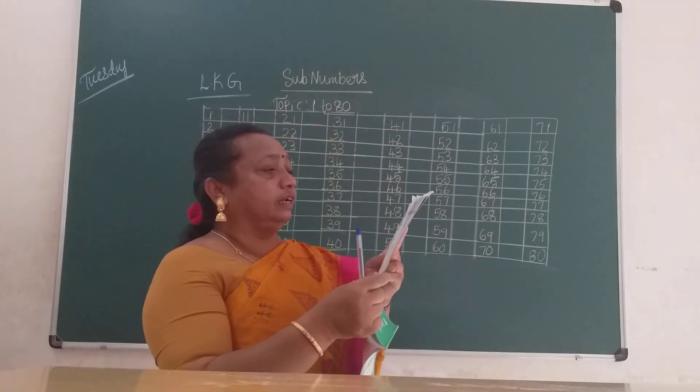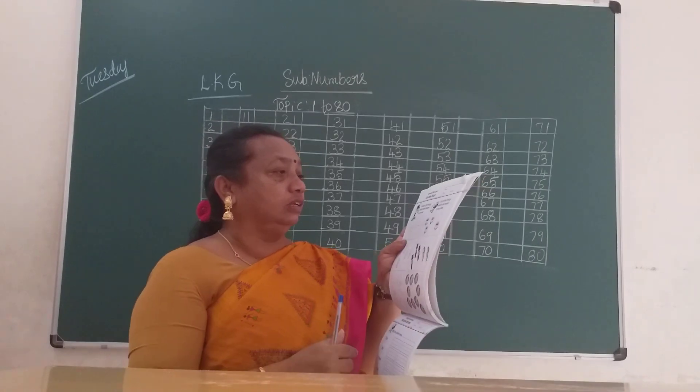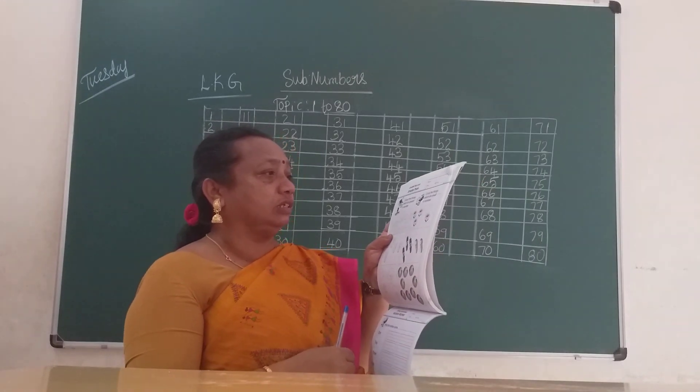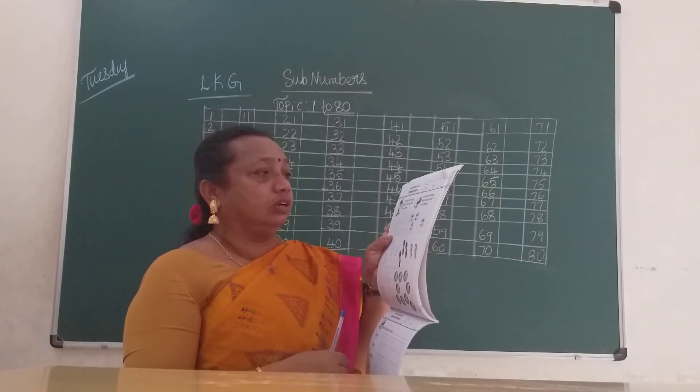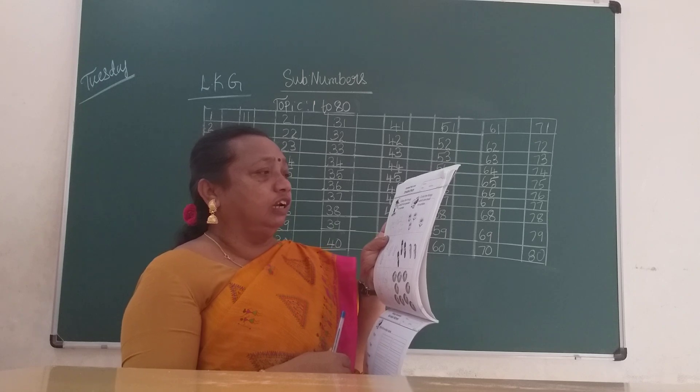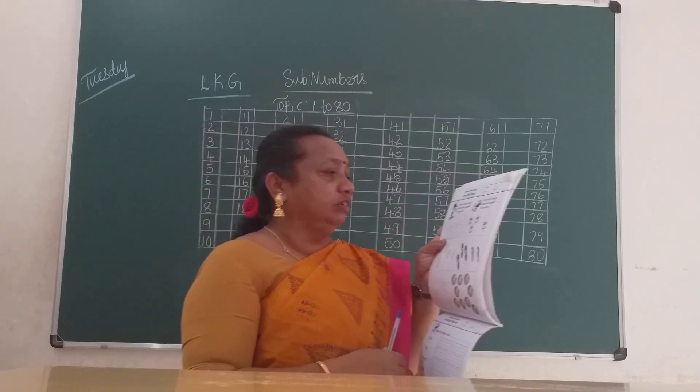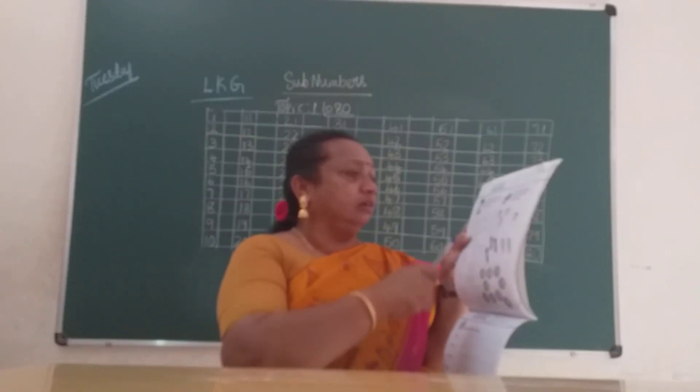Smaller, greater than and smaller than. Look at this picture, children. Circle the things which are small in number. Which is small, children?